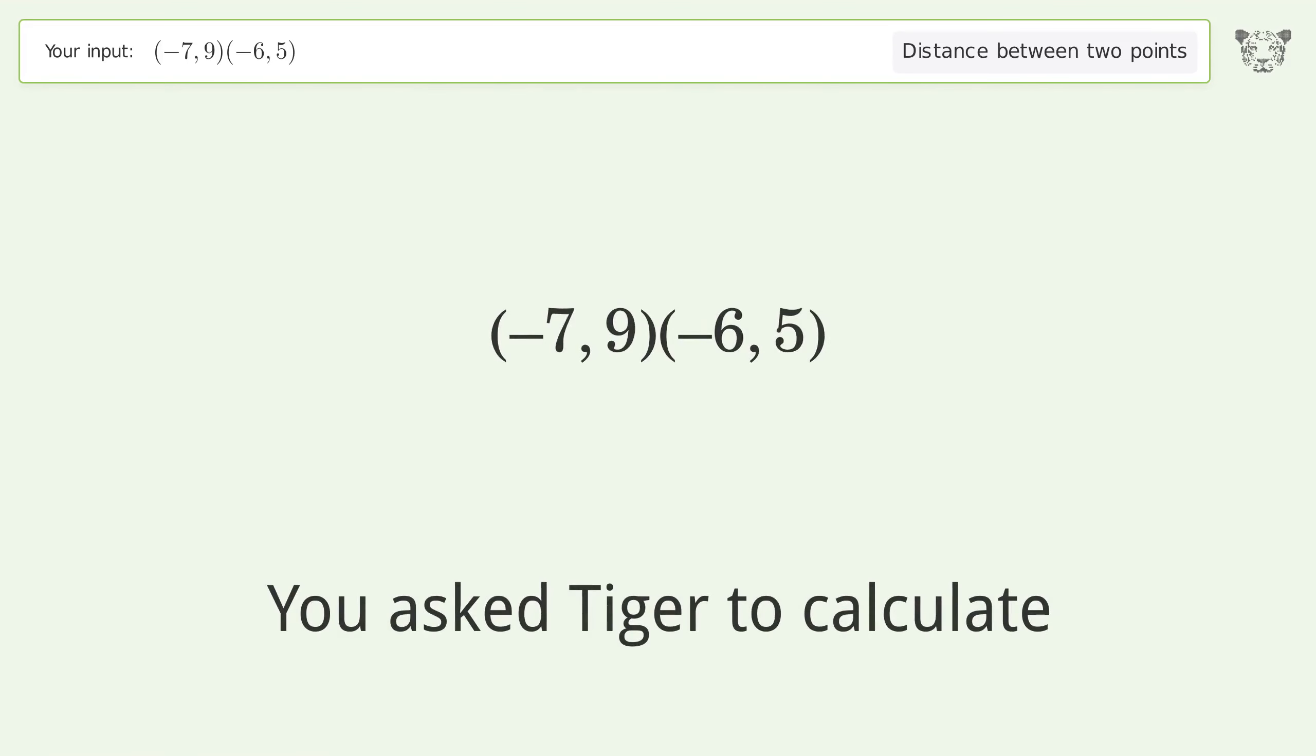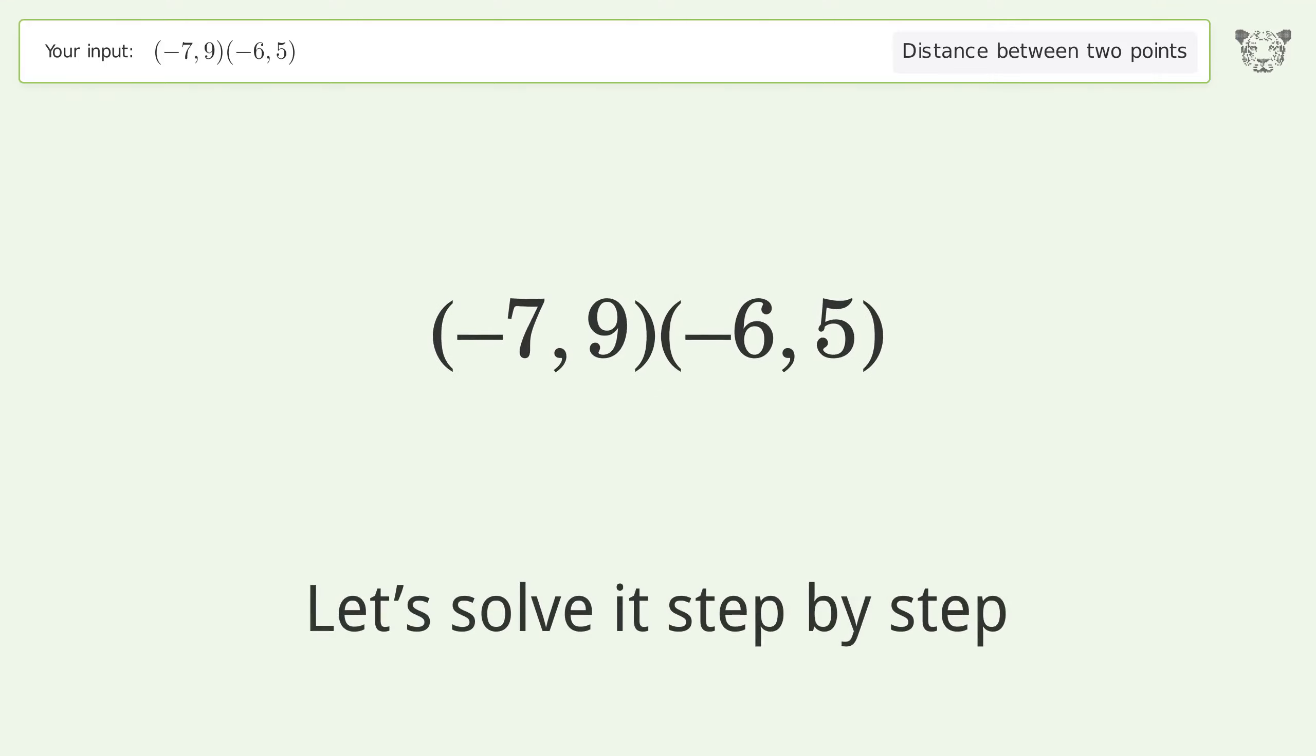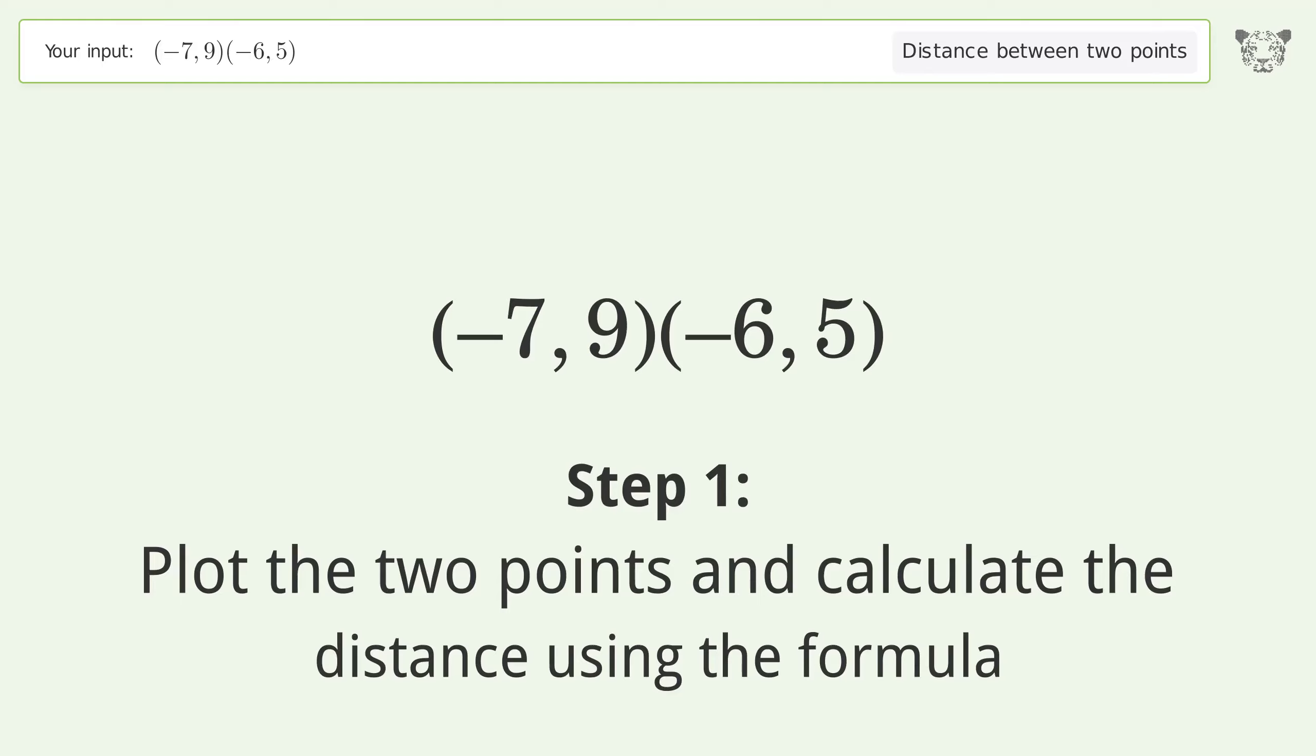You asked Tiger to calculate the distance between two points. The distance is the square root of 17, or 4.123. Let's solve it step by step: plot the two points and calculate the distance using the formula.